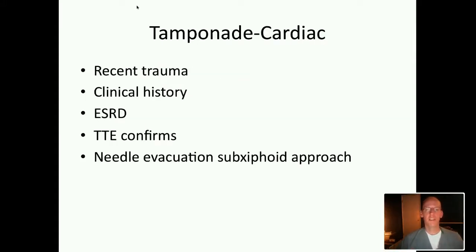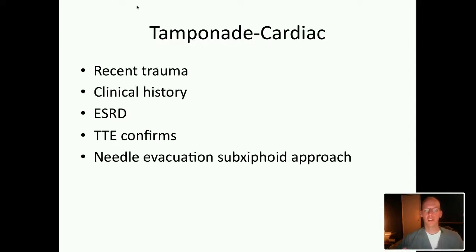Tamponade: high index of suspicion is essential — if you don't look for it, you'll never find it. Think of it with recent trauma, pericardial rub on exam, end-stage renal disease with uremic effusions, chest trauma, or recent central line placement — a central line tip can perforate the right atrium and cause tamponade. Transthoracic echo confirms the diagnosis, and treatment is emergent needle decompression of the pericardial space via a subxiphoid approach. If not comfortable, mobilize cardiac surgery, cardiology, trauma surgery, or emergency medicine.